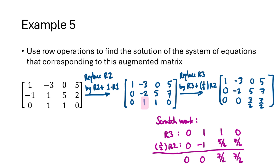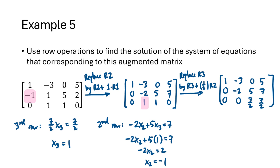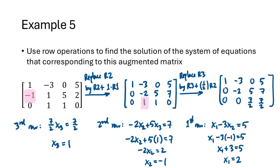Now we interpret the rows as equations. The third row represents 7/2 x3 equals 7/2, giving us x3 equals 1. Working backwards, the second row represents negative 2x2 plus 5x3 equals 7. Substituting x3 equals 1 gives us x2 equals negative 1. Finally, the first row represents x1 minus 3x2 equals 5, and substituting x2 equals negative 1 gives us x1 equals 2. So the solution is (2, negative 1, 1).